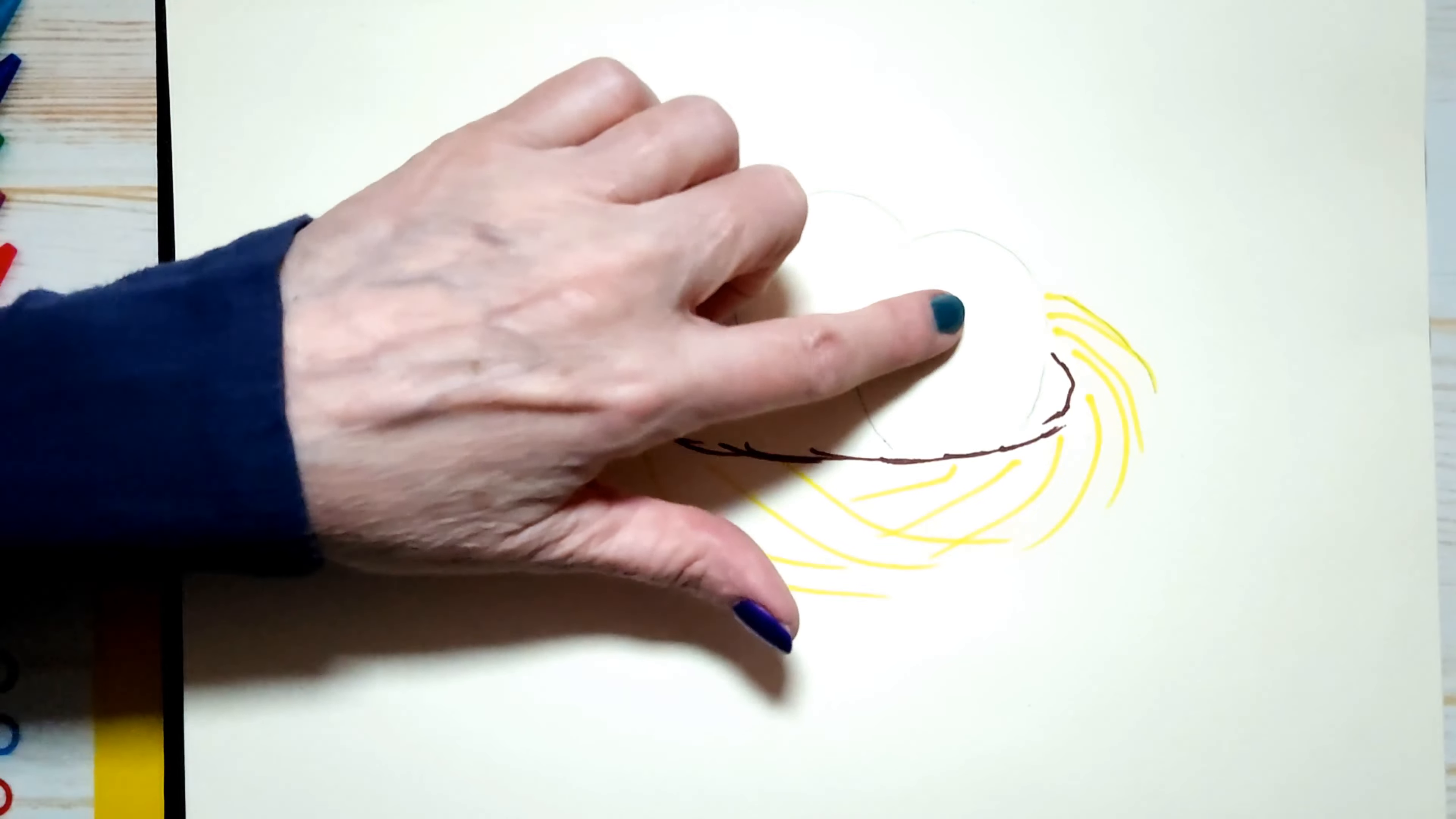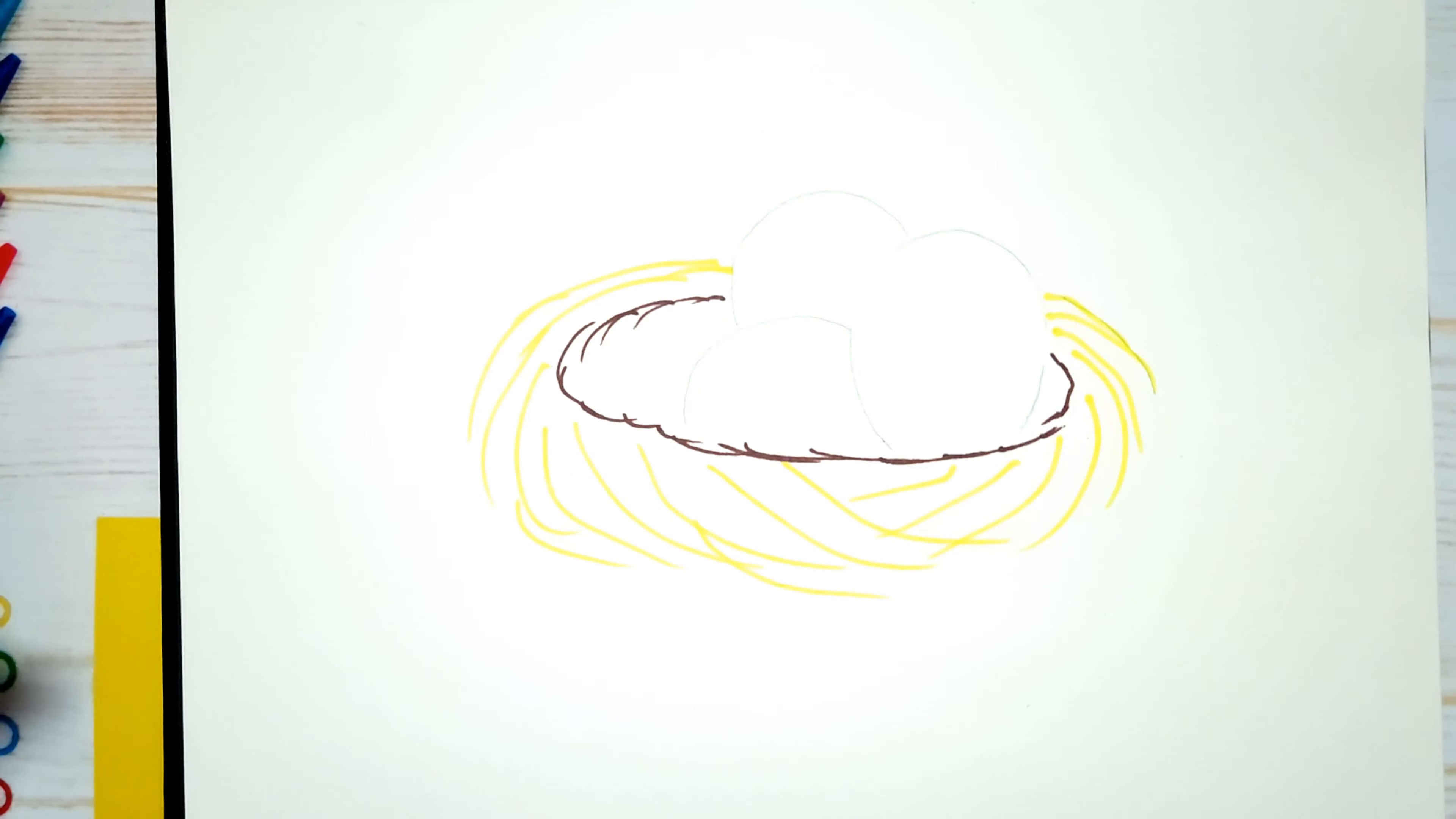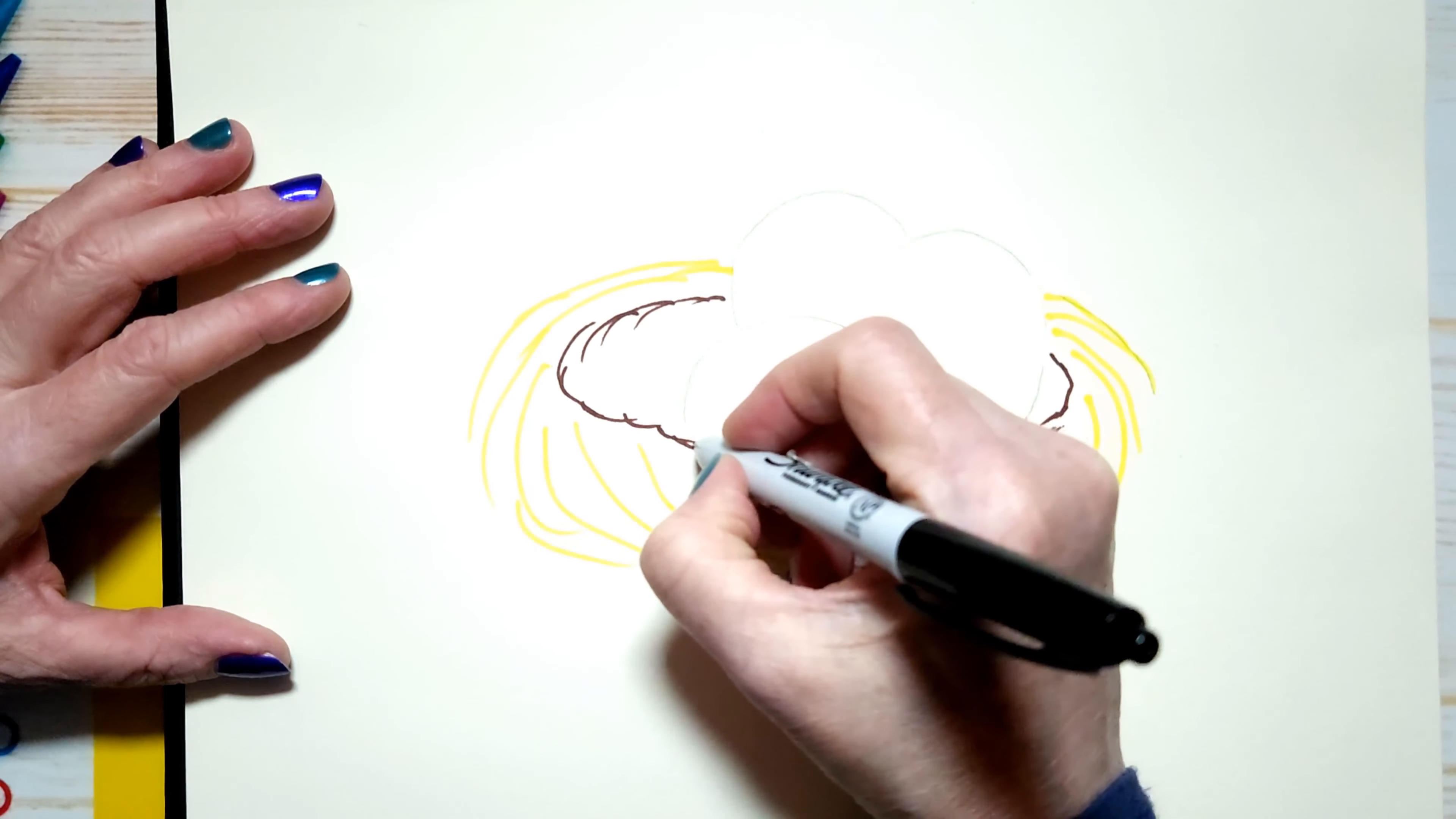So do you see what I did here? I've kept the shapes of the eggs drawn in pencil, and I've erased all the pencil marks for the nest. So what I'm going to do is take my black fine-tipped Sharpie.